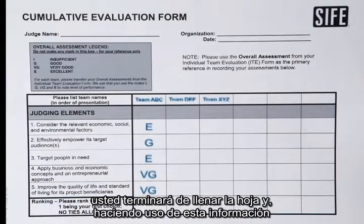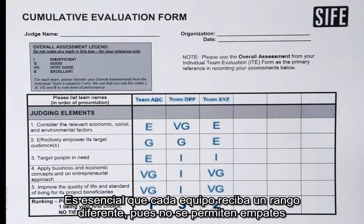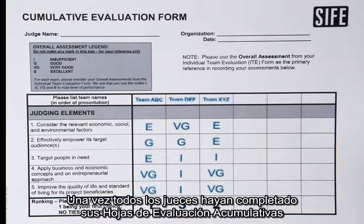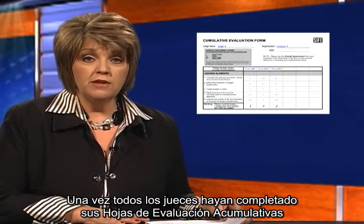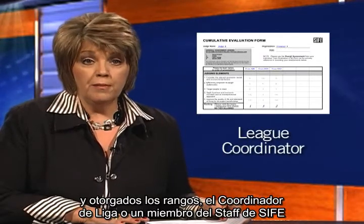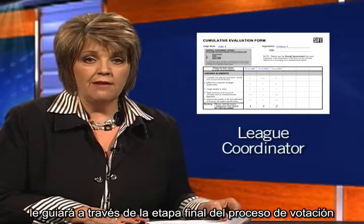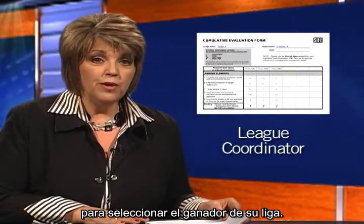After the final presentation, you'll finish completing the form and then use this information to give each team a ranking, with one being your first choice. It's essential that each team receive a different ranking, as no ties are allowed. Once all judges have completed their cumulative evaluation forms and ranked the teams, your league coordinator or a member of the SIFE staff will guide you through the final stage of the voting process to pick an overall winner from your league.